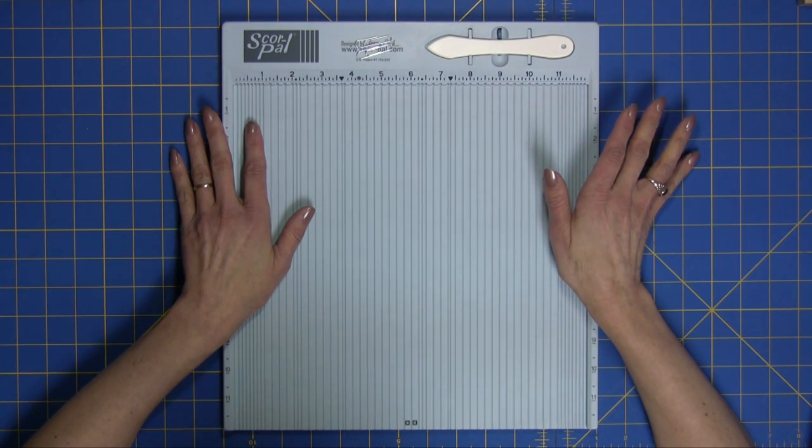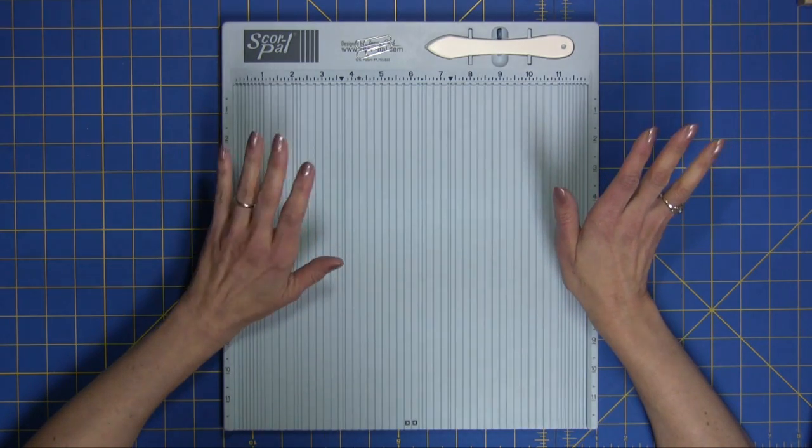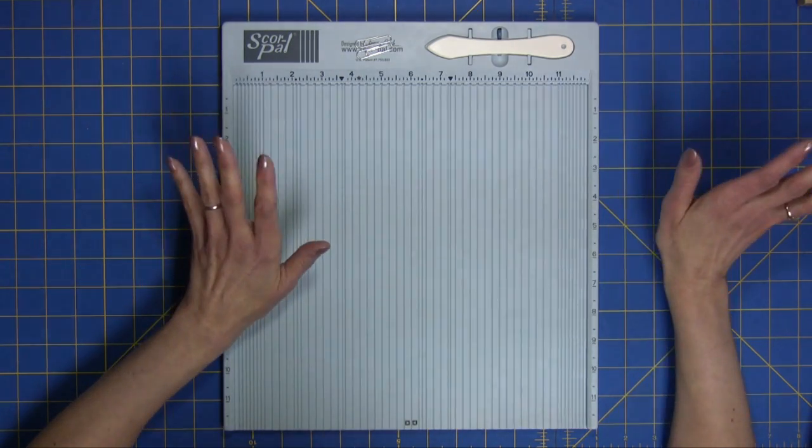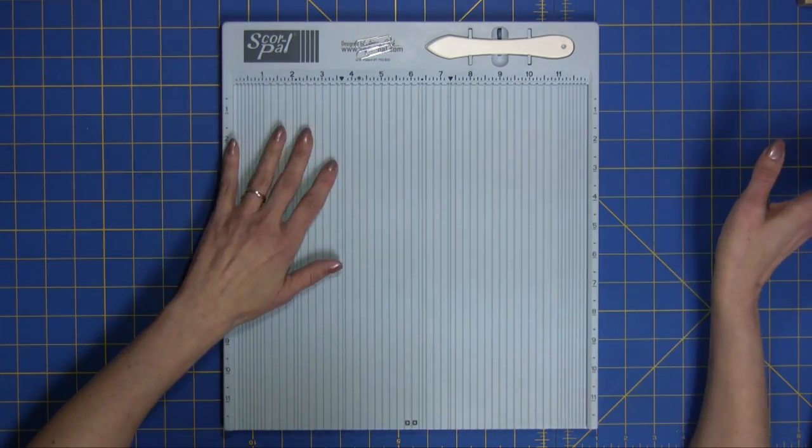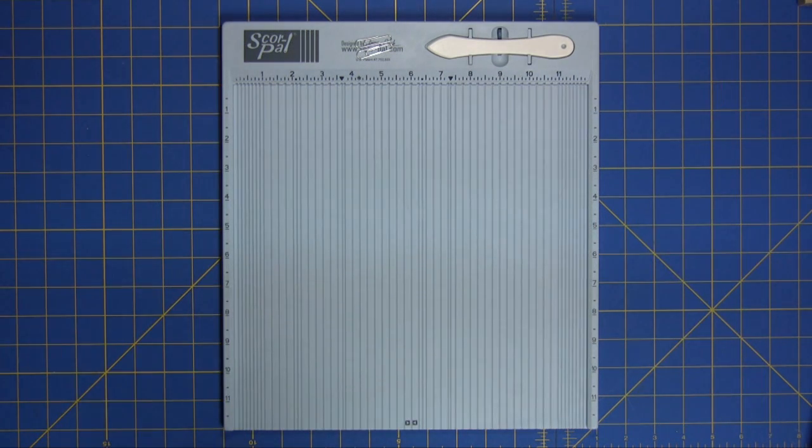When I want to do scoring that involves the eighth of an inch increments and making quick and easy score envelopes, I'll still, and for variety too, I'll use the Martha Stewart scoreboard. The bottom line is I love both of them. And I'm glad I own both of them. Now I own all three of them.